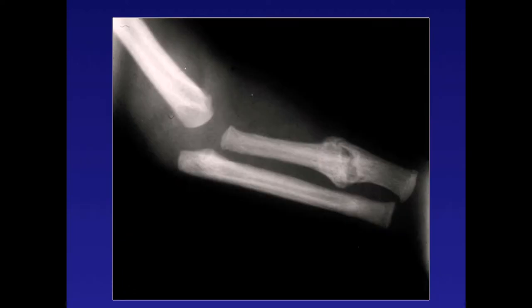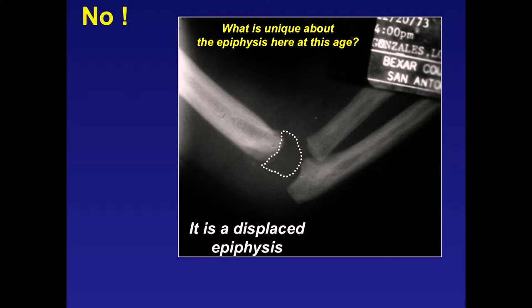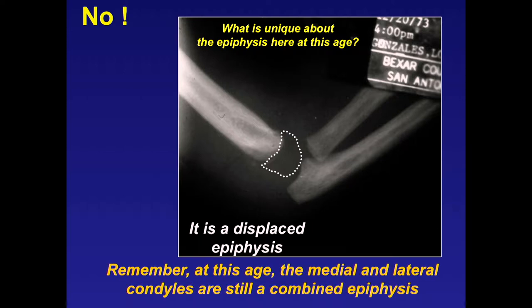Here's a young infant—is this elbow dislocated? No. It's a displaced total epiphysis. What's unique at this age is that the epiphysis is unossified, and the medial and lateral condyles form a combined epiphysis until about age two. So this is not a dislocated elbow—it's a distal humeral physis fracture.